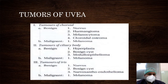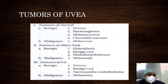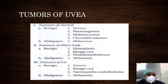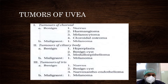We will now discuss the tumors of the uvea, arising from the iris, ciliary body, and choroid. Tumors of the choroid can be classified as benign — including nevus, hemangioma, melanocytoma, and choroidal osteoma — and malignant, which is melanoma. Tumors of the ciliary body include benign hyperplasia, benign cyst, medulloepithelioma, and malignant melanoma. Tumors of the iris include nevus, benign cyst, juvenile xanthogranuloma, endothelioma, and malignant melanoma.